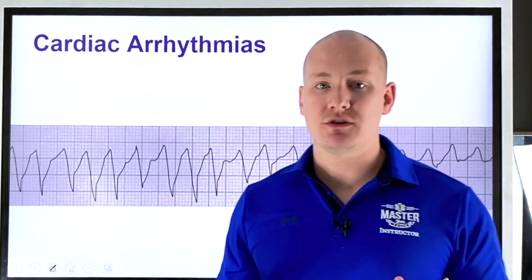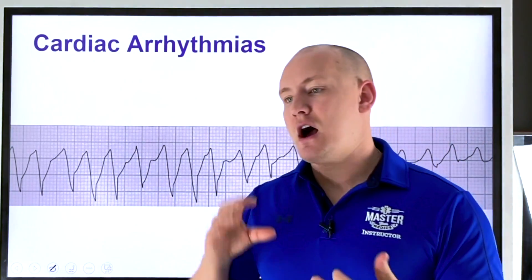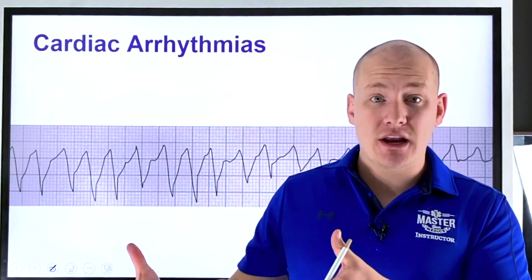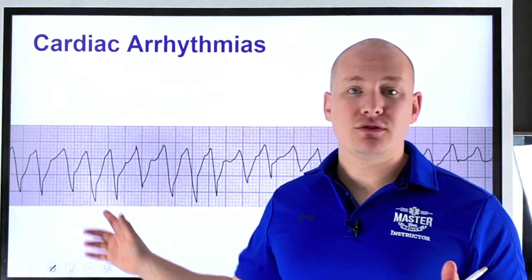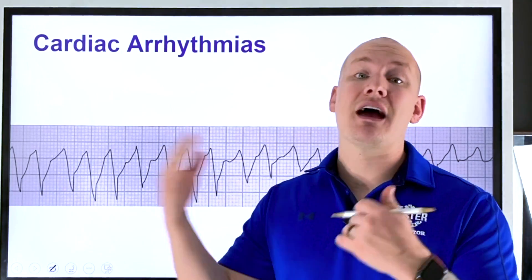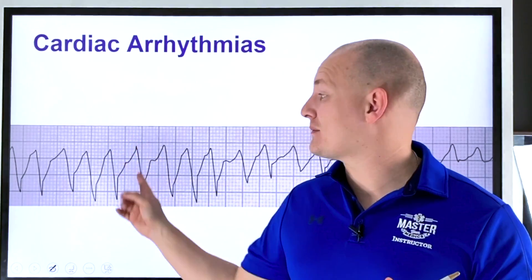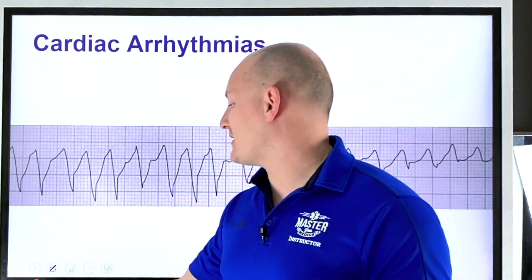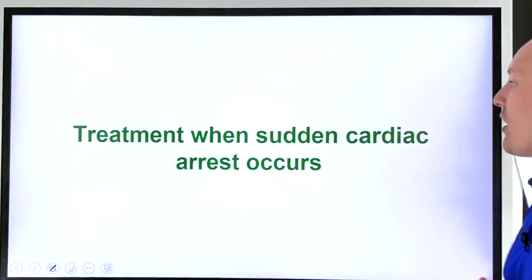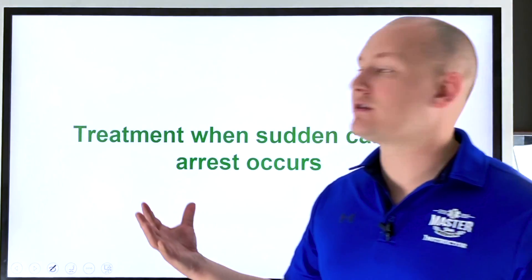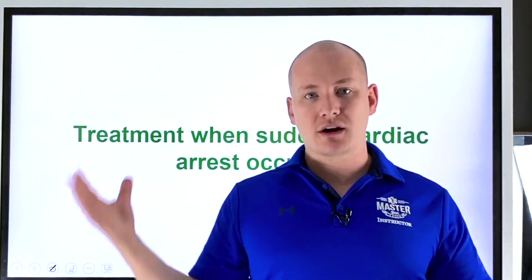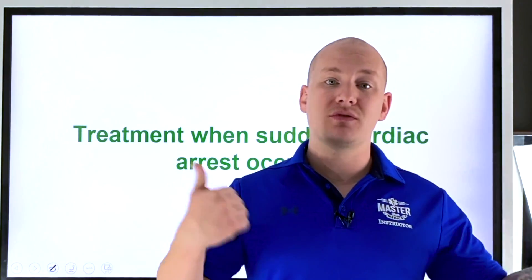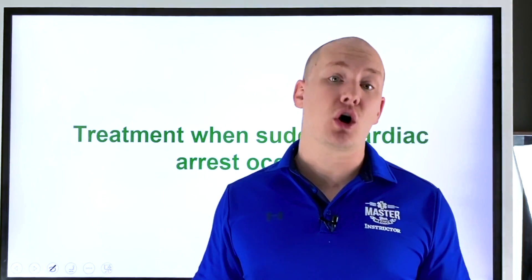When you have a patient with general malaise, weakness, or confusion — things that lead you toward a possible electrolyte abnormality — take a look at the QTC. It might give you an indication that there's something you need to deal with, because the chances of that patient going into something like polymorphic VTach causing sudden cardiac arrest are quite high. When it comes to treatment, it really depends on the cause — the answer is to treat the cause.